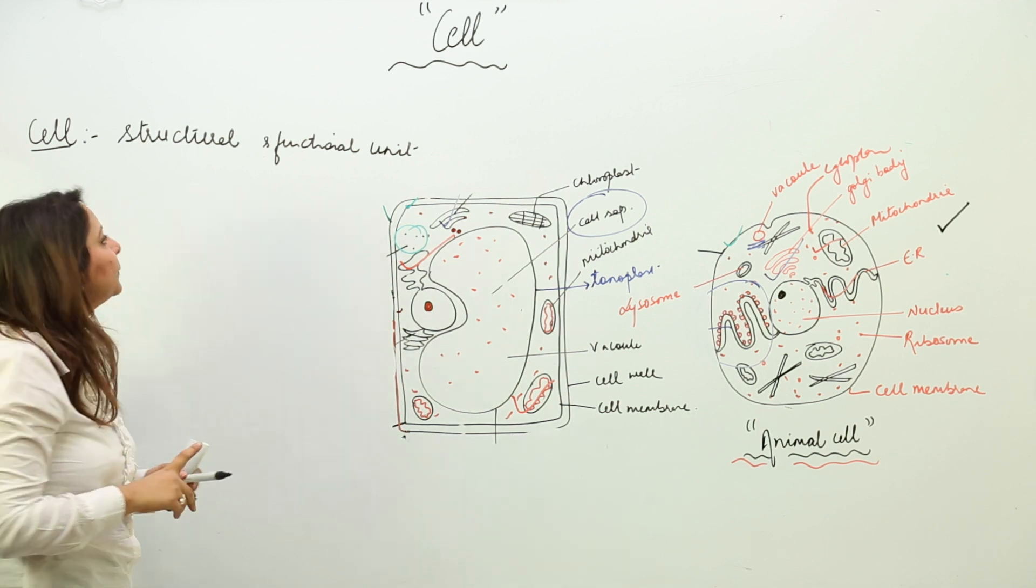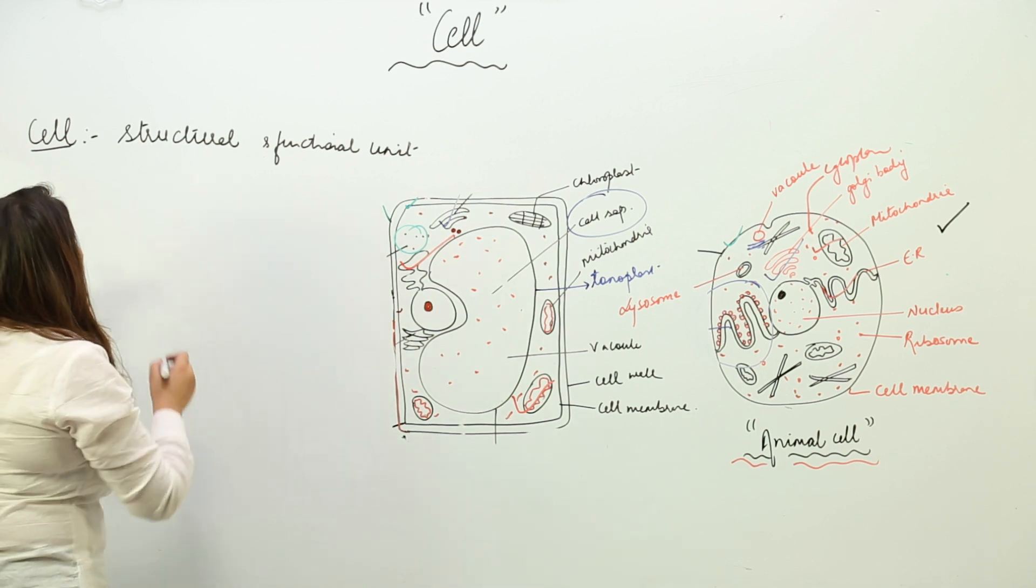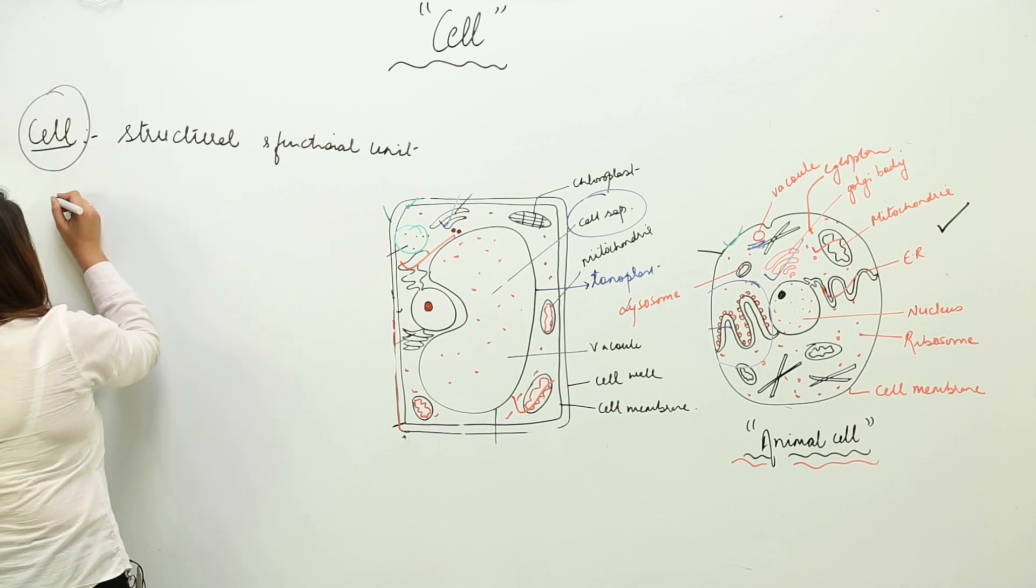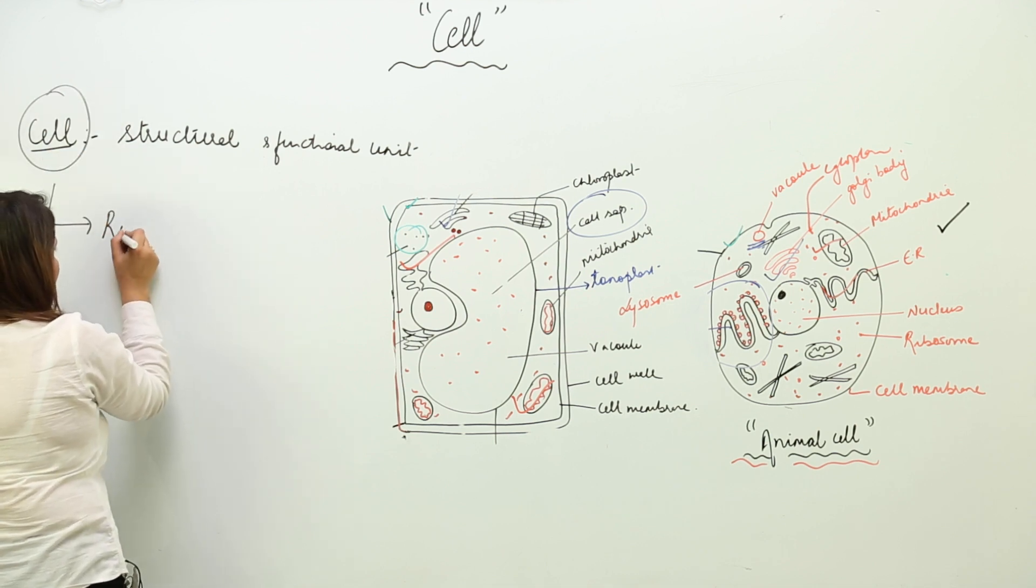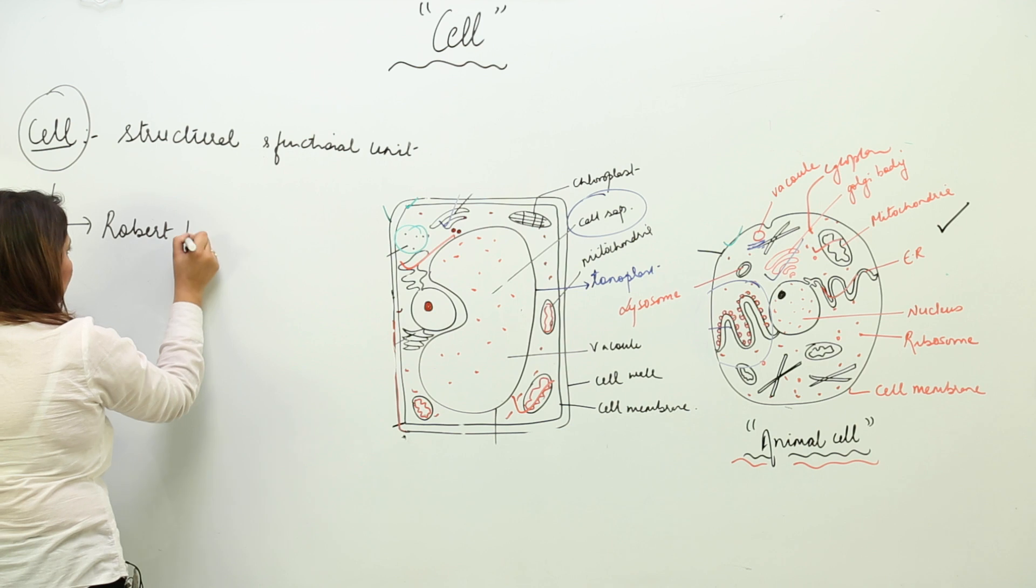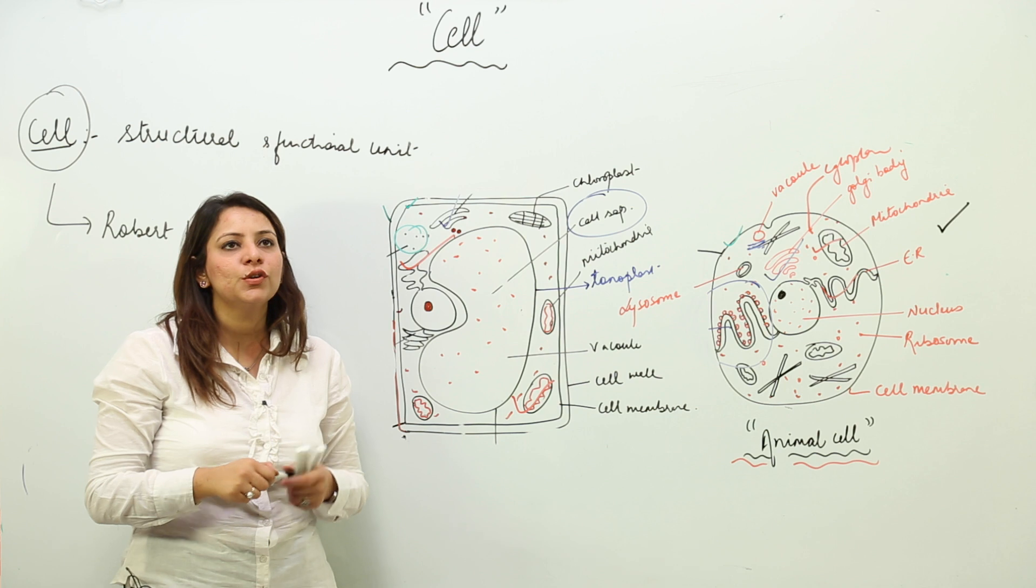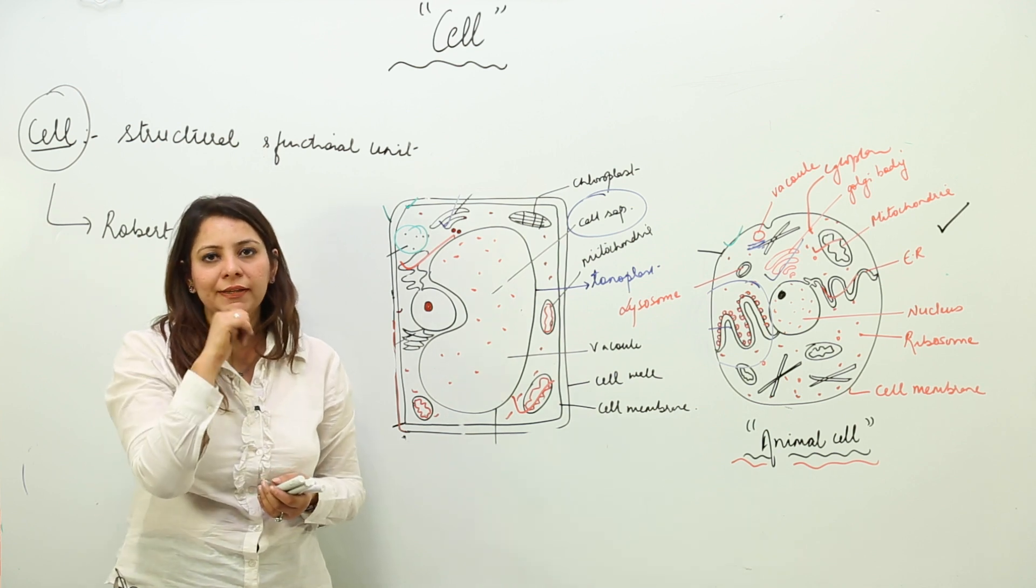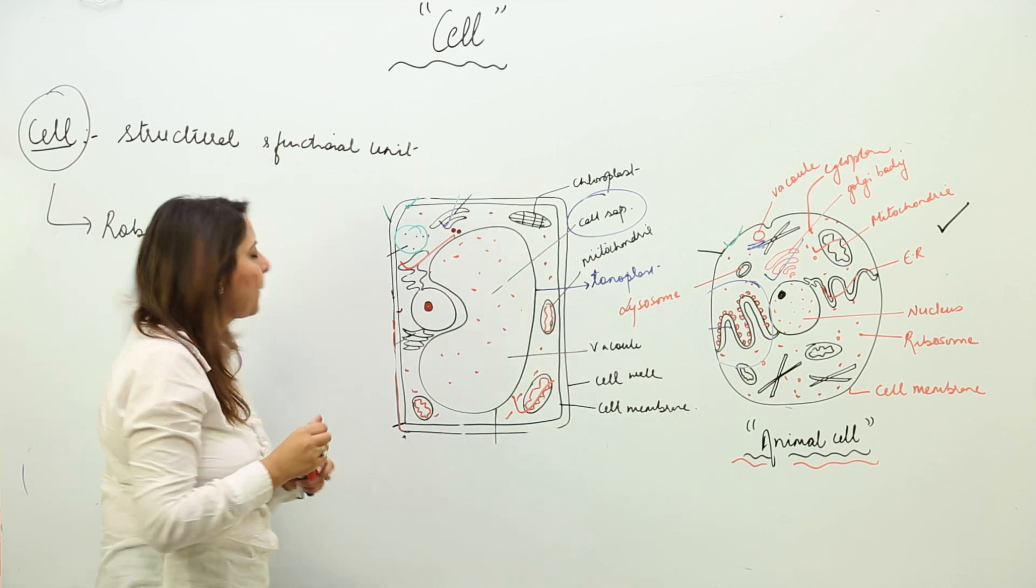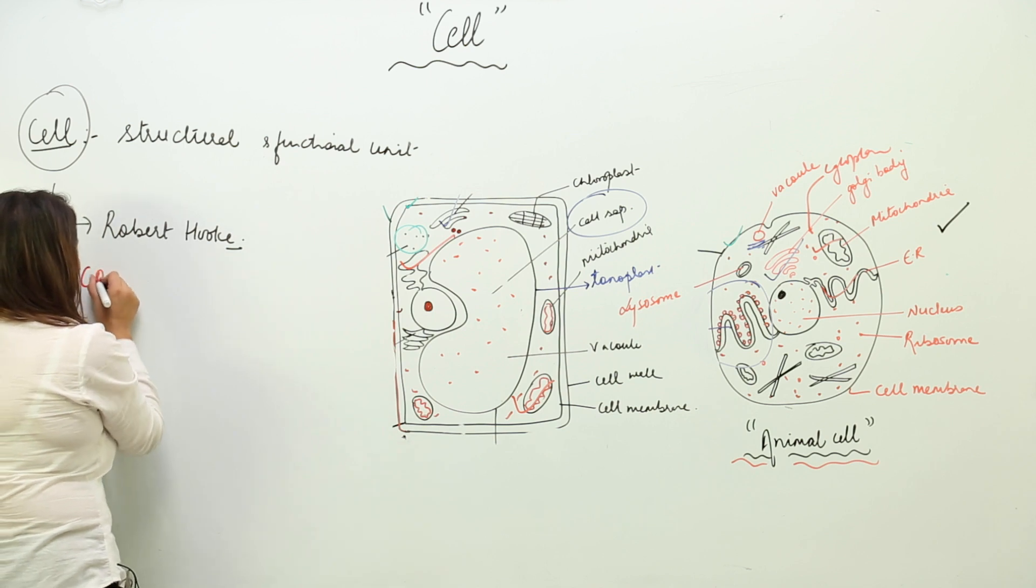Cell is a structural and functional unit of our life or our body. The first time the cell was seen by a scientist, Robert Hook. Actually, he was examining the bark of tree, called as cork. He was looking at the cork under microscope.